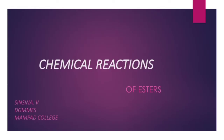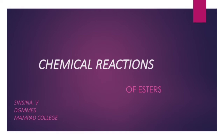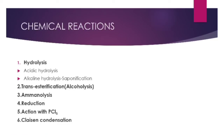In this section we deal with chemical reactions of esters. We mainly discuss six chemical reactions. The first one is hydrolysis, which is divided into two: acidic hydrolysis and alkaline hydrolysis. Alkaline hydrolysis is also called saponification.